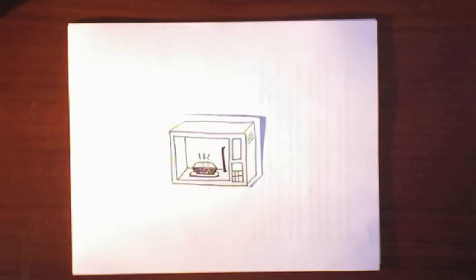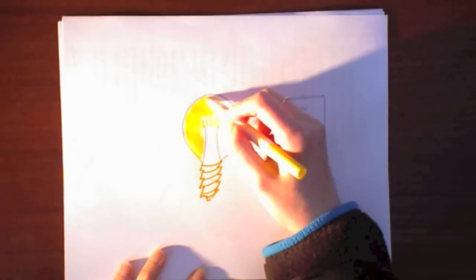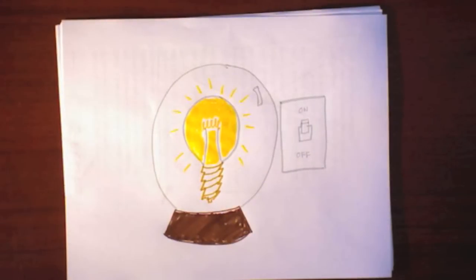That means when we all get home from work and start microwaving our pot pies, power plants have to adjust constantly to meet the demand. That sounds like a bunch of hocus pocus, right? As in, how do they know I switched on the light?